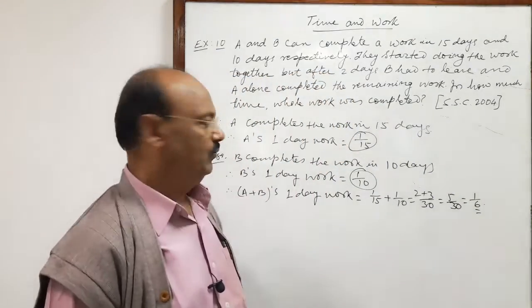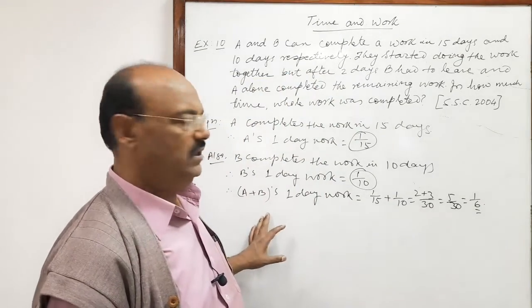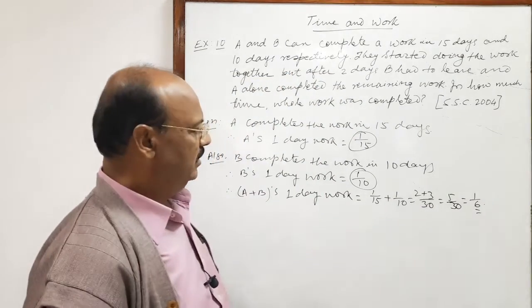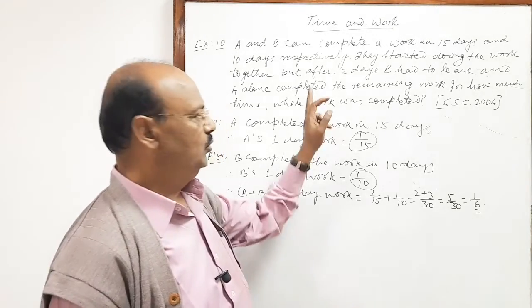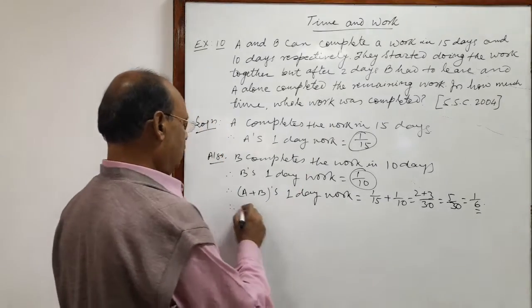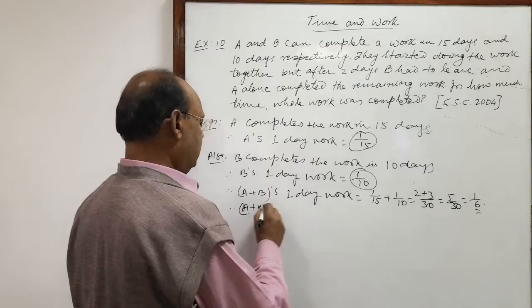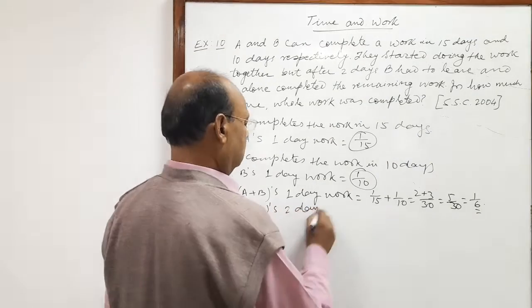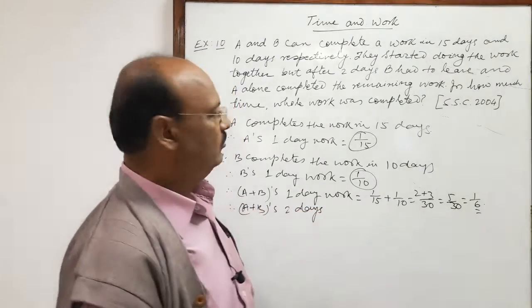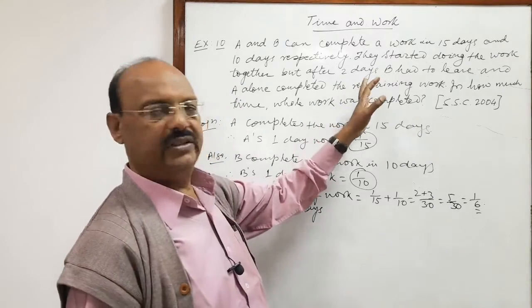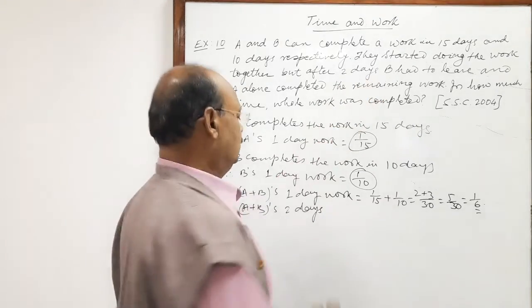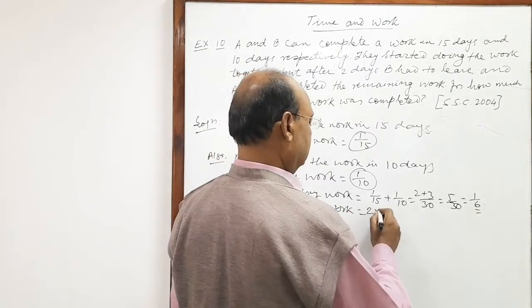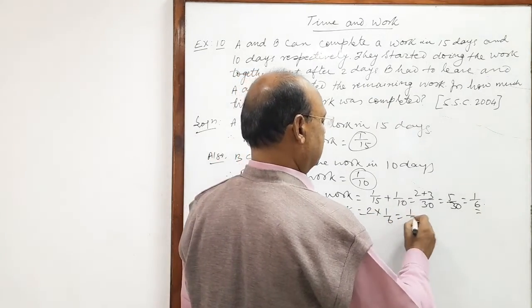They have worked together for two days, so A plus B's two days work — because they worked continuously together for two days — is two times 1/6.